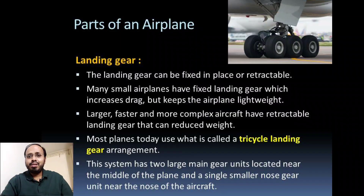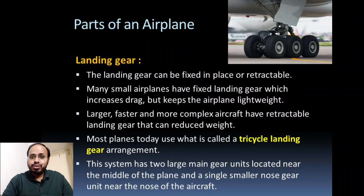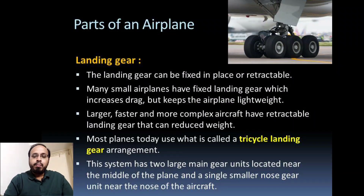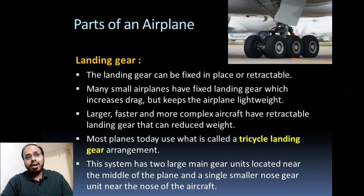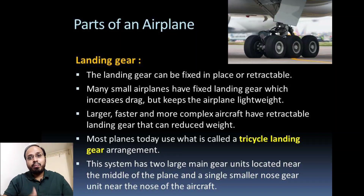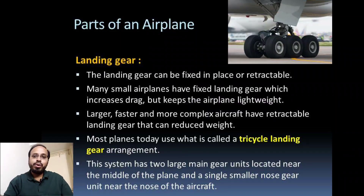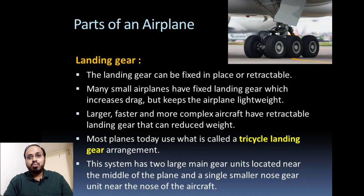The landing gear is a very crucial part of the aircraft. Landing gear can be fixed in place or retractable. Many small airplanes have fixed landing gear, which increases drag but keeps the airplane lightweight. Larger, faster, and more complex aircraft have retractable landing gear to reduce drag. More drag means more fuel consumed in order to lift the aircraft body.